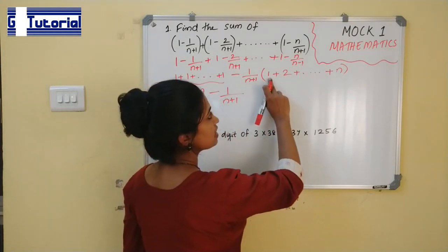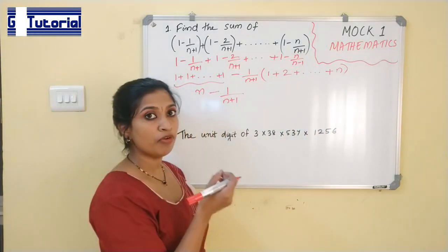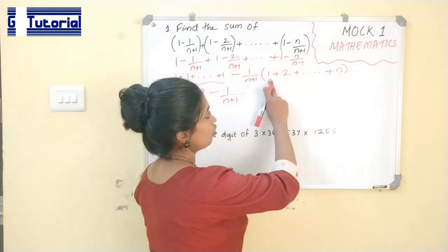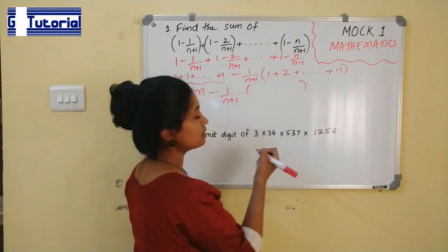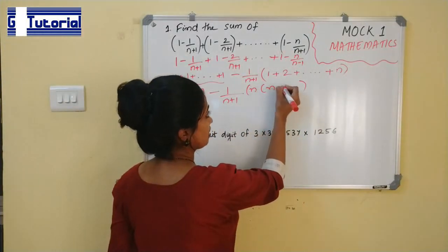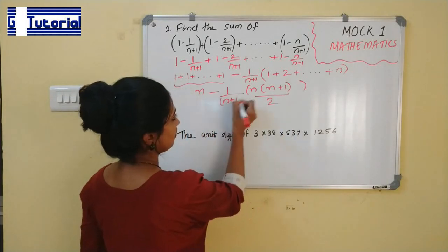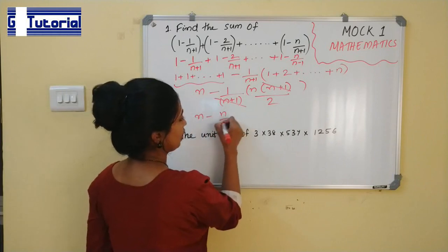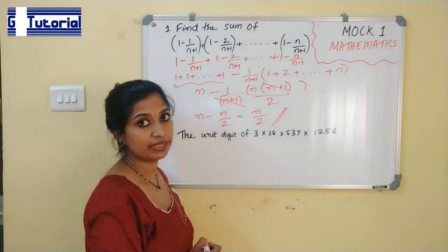That is the sum of n terms of the natural number series. The sum of first n terms is given by the formula n(n+1)/2. Here we can cancel (n+1) and (n+1). So we get n minus n/2, which equals n/2. So the answer of this question is n/2.